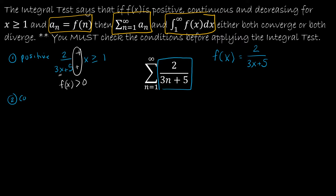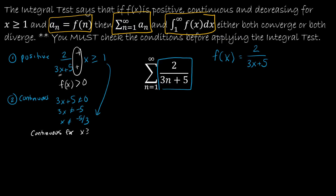Is it continuous? If I think about where a rational function is discontinuous, I know that 3x + 5 cannot equal 0, meaning x cannot equal −5/3. But we already know that x is going to be greater than or equal to 1, so that discontinuity is outside our domain — therefore the function is continuous for x ≥ 1.